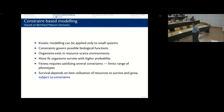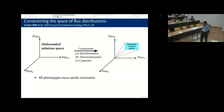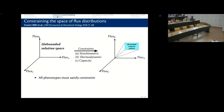What kind of constraints do organisms have to obey? Thermodynamic constraints have to be obeyed — it's a law of physics, you can't violate it. Similarly, stoichiometric constraints have to be obeyed. Think of this as a three-dimensional space with V1, V2, and V3 as three fluxes. Any point in space represents three flux values, and you can put constraints like V1 greater than 0, V2 greater than 0, V3 greater than 0, and V1 equals 2 V2.